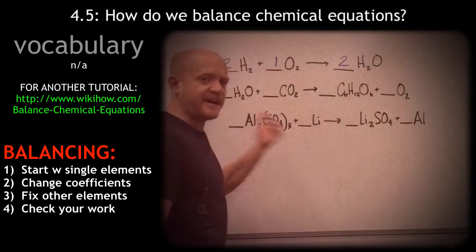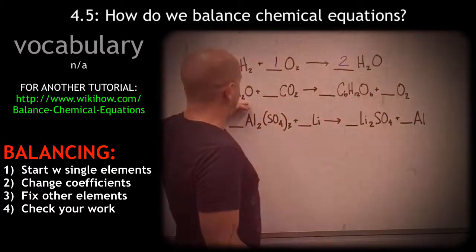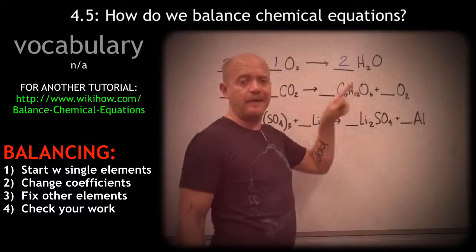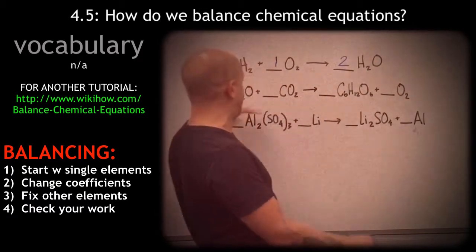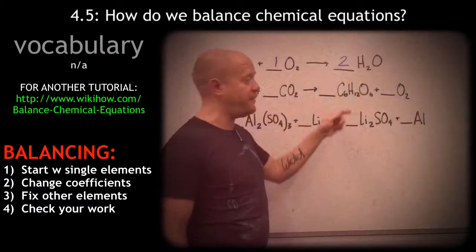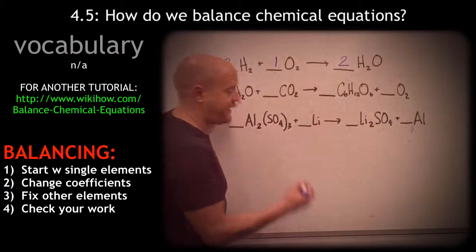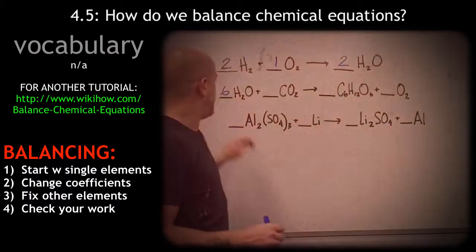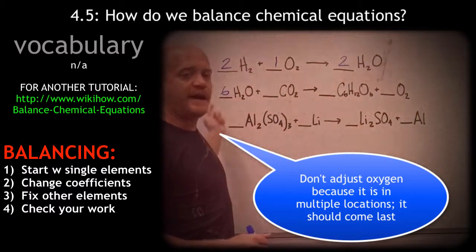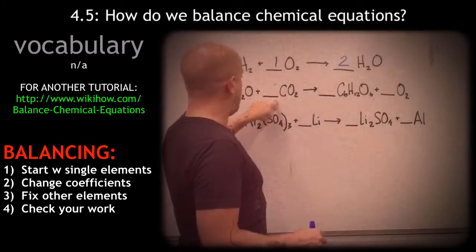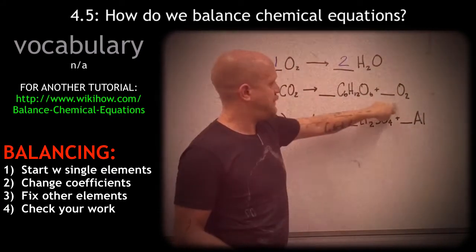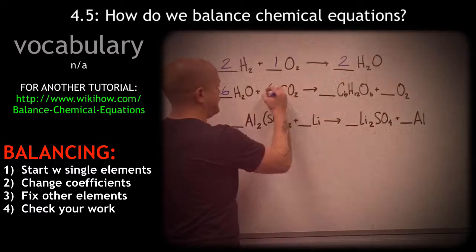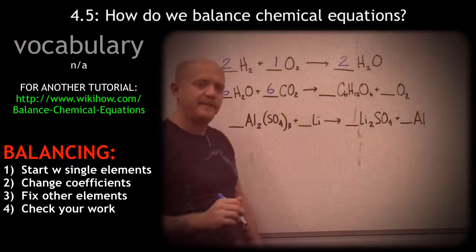Let's check where we have hydrogens — we have two hydrogens on the left and twelve hydrogens on the right. Since there's no other location for hydrogens, I can automatically know that this coefficient needs to be a six, giving us twelve on each side. Now let's check the carbons: I have one carbon on the left and six carbons on the right, so the coefficient on the left needs to be changed to a six.